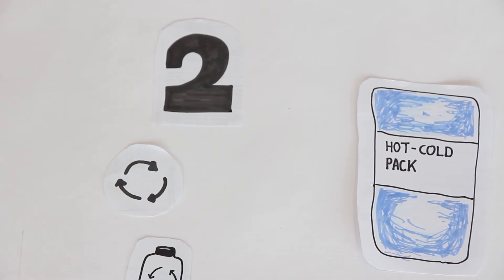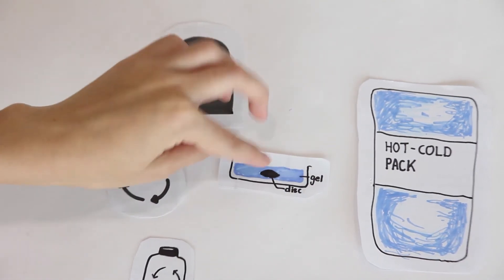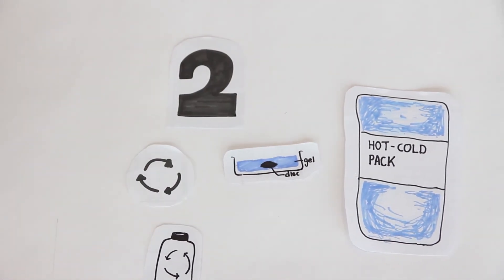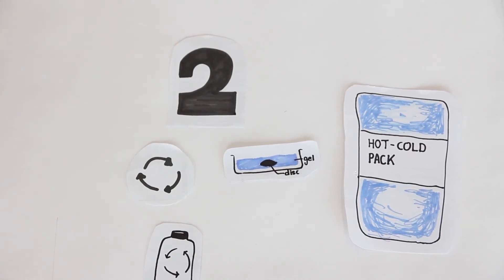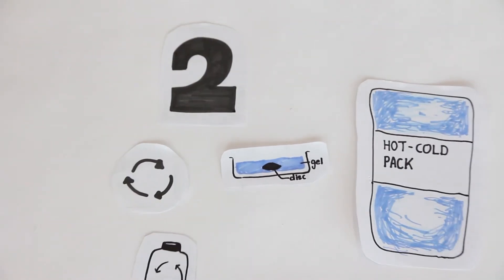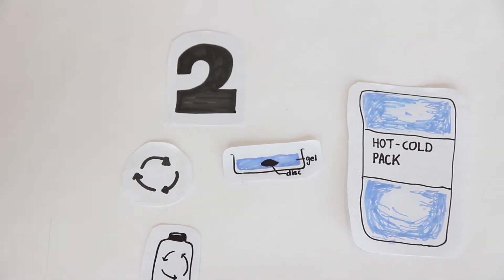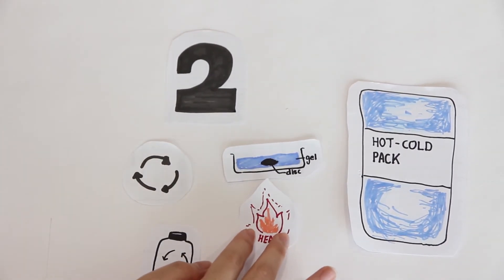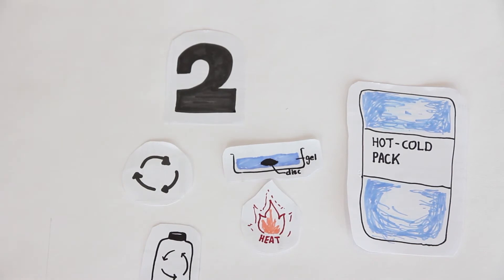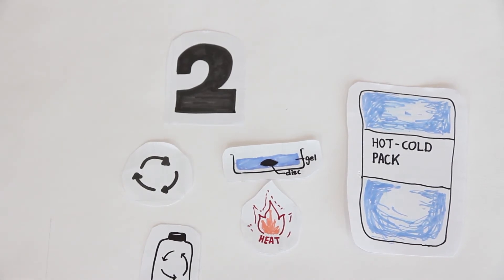Inside the hot pack, there is a gel and a small metal disc. Salt in the hot pack is forced to dissolve more even though the salt is already saturated earlier. Further saturation occurs by heating the solution. Since the water contains a lot of salt, the solution becomes extremely unstable.